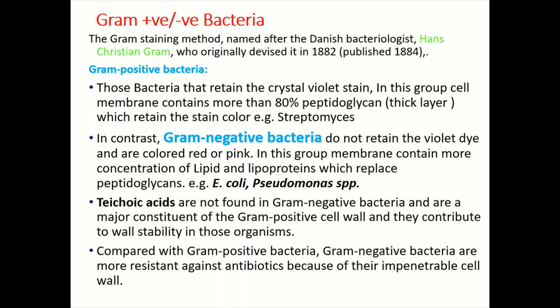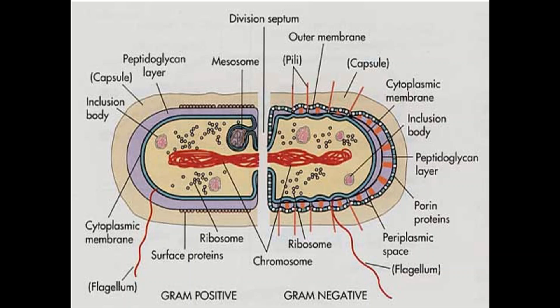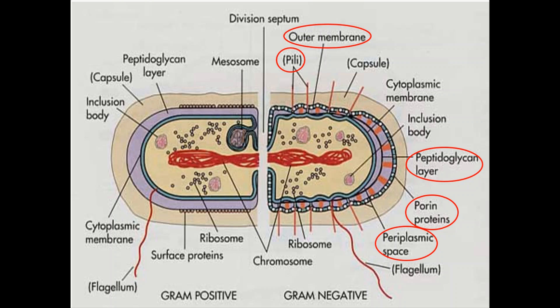Gram negative bacteria are more resistant against antibiotics because of their impenetrable cell walls. Pili are mostly present in gram negative bacteria, which also contributes to their antibiotic resistance. There is a thin layer of peptidoglycan, porin proteins are present in the outer membrane, and a periplasmic space is present between the peptidoglycan layer and the inner membrane.